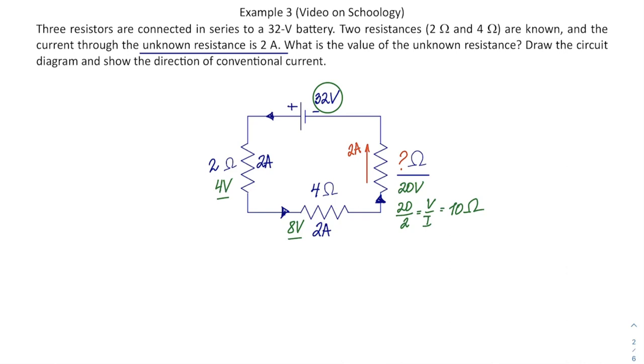The second way, which is shorter: if I know that total current is 2A, and I know that because it's going through the unknown resistance it goes through all of it, and the total voltage is 32V, then I can figure out the total resistance, which is 32 over 2, which is 16Ω. That's my total resistance.